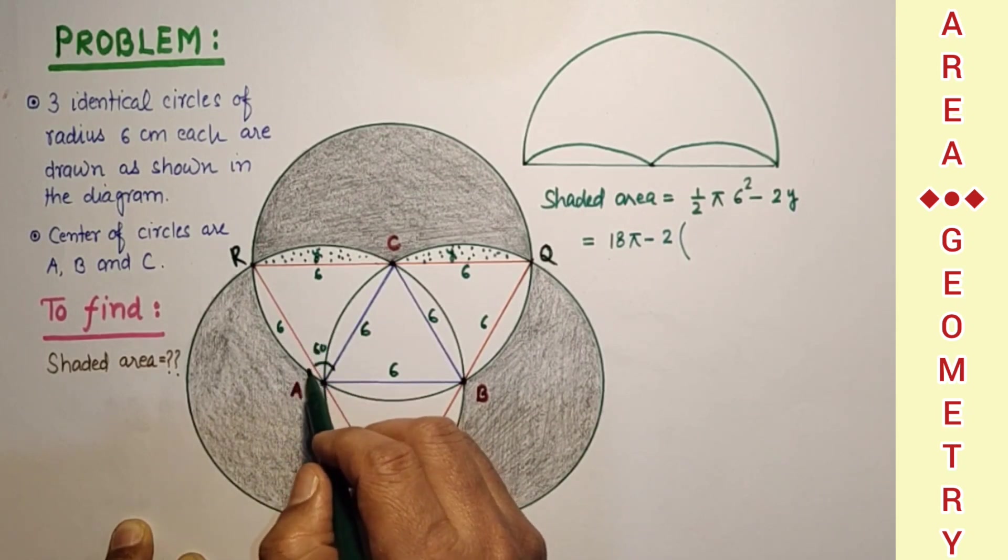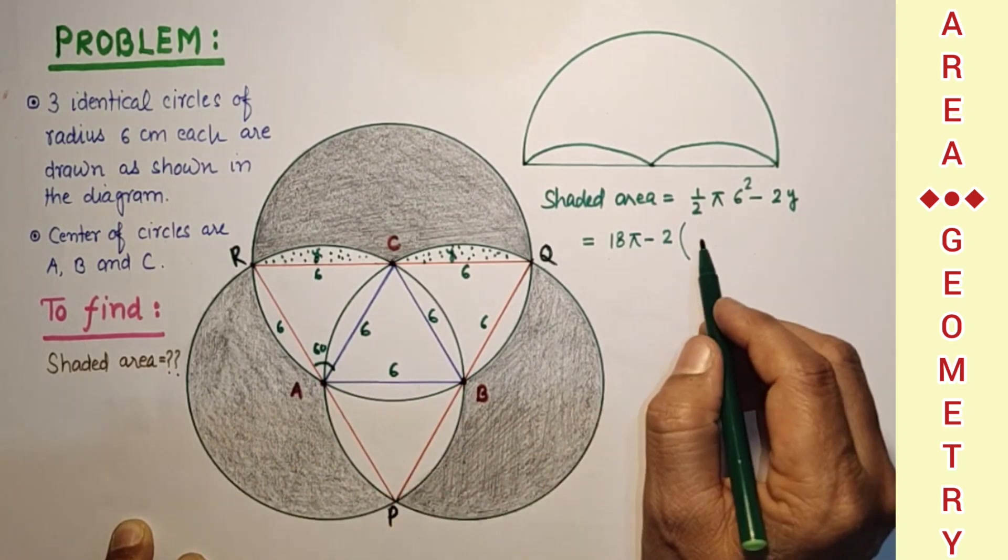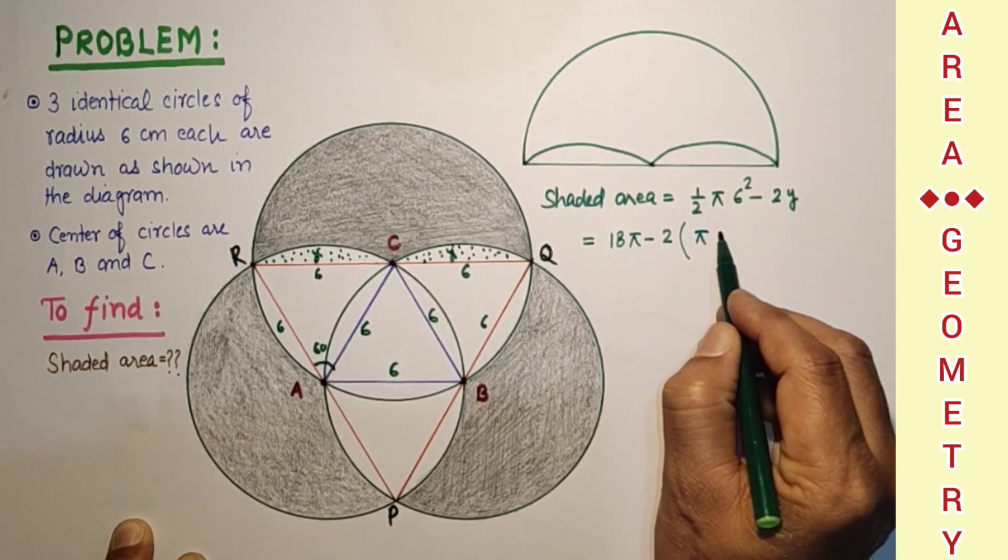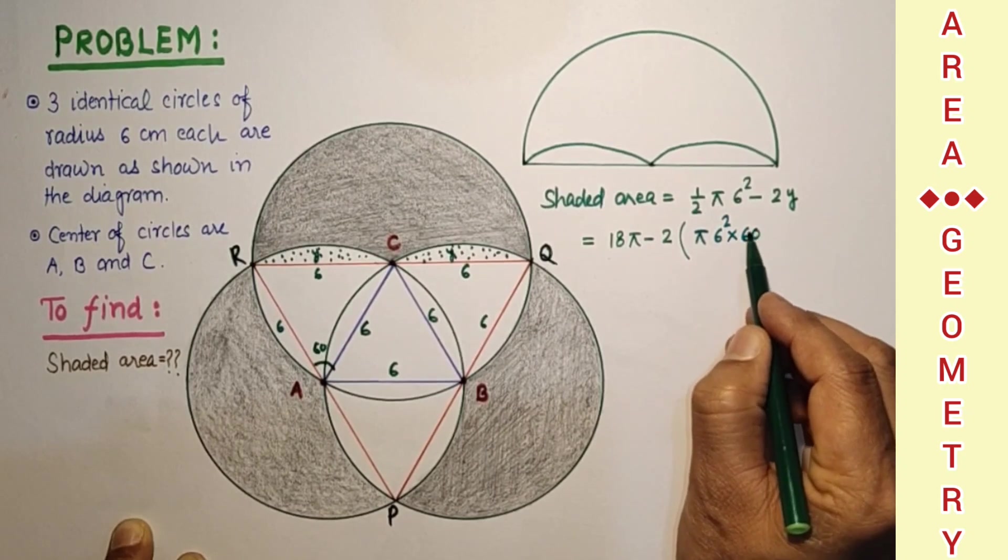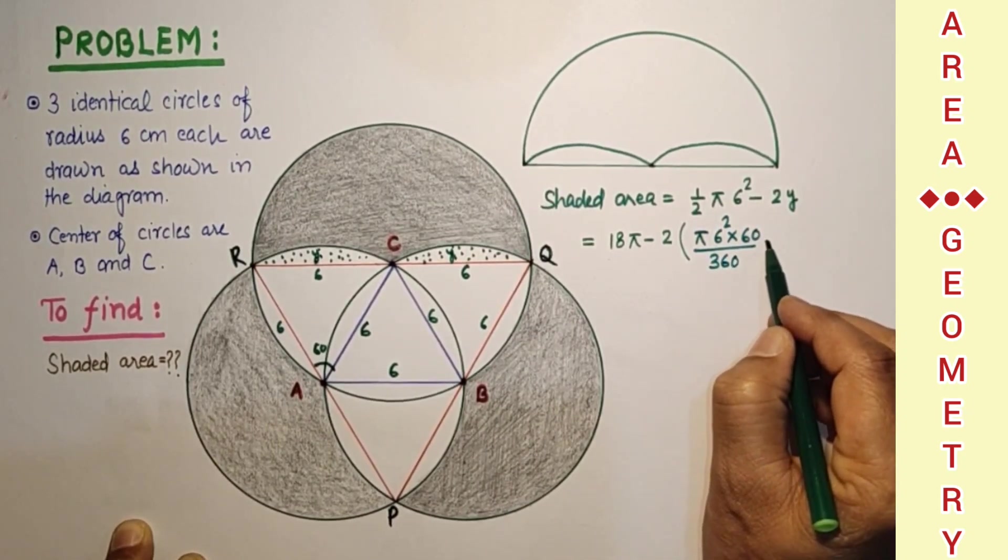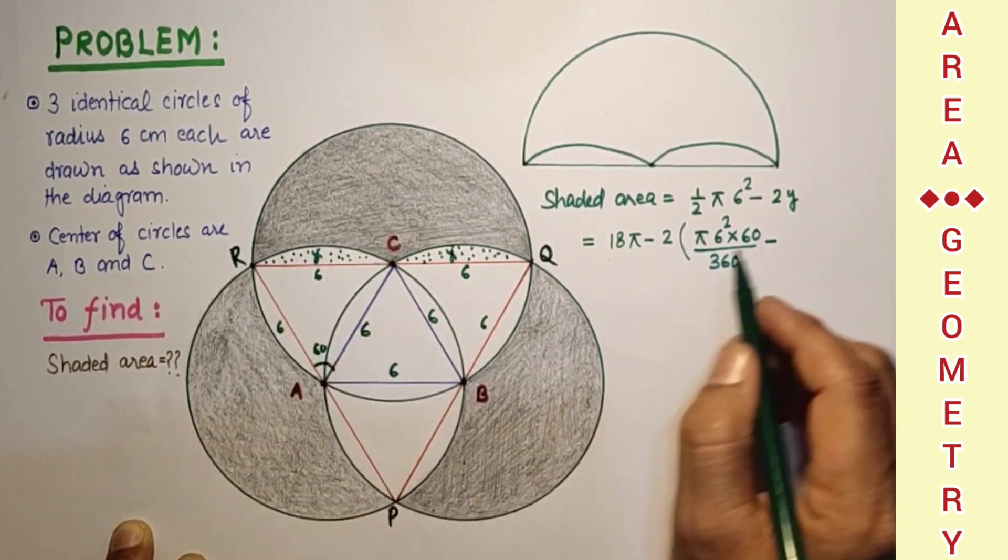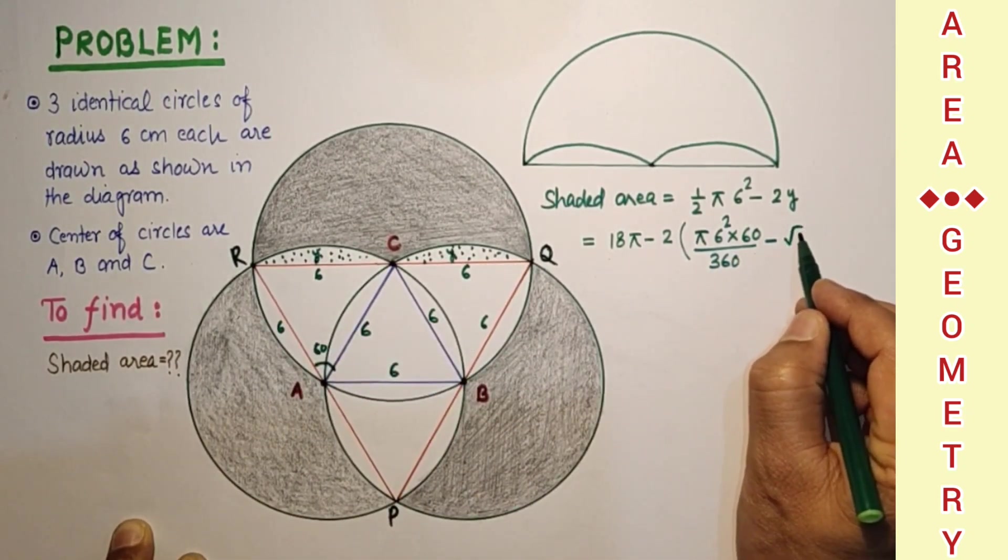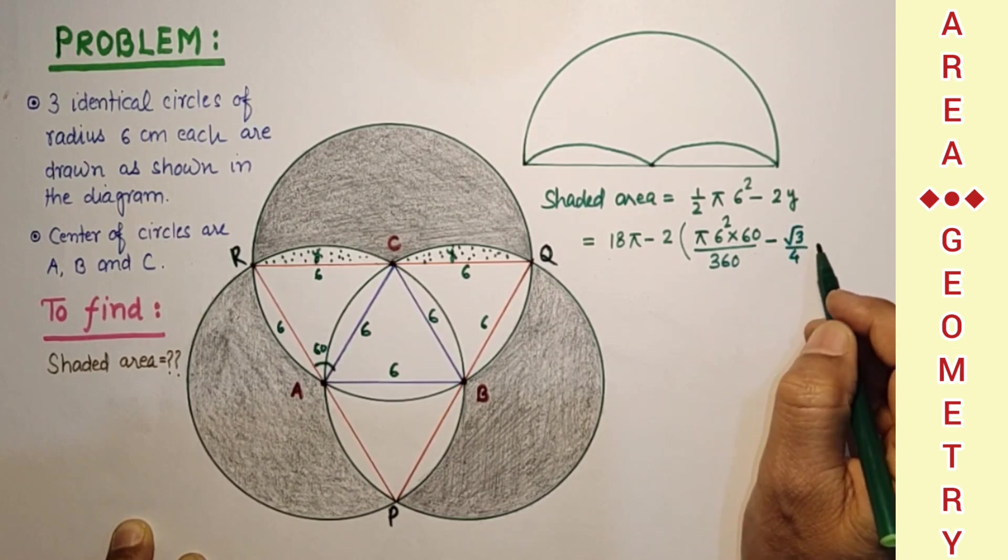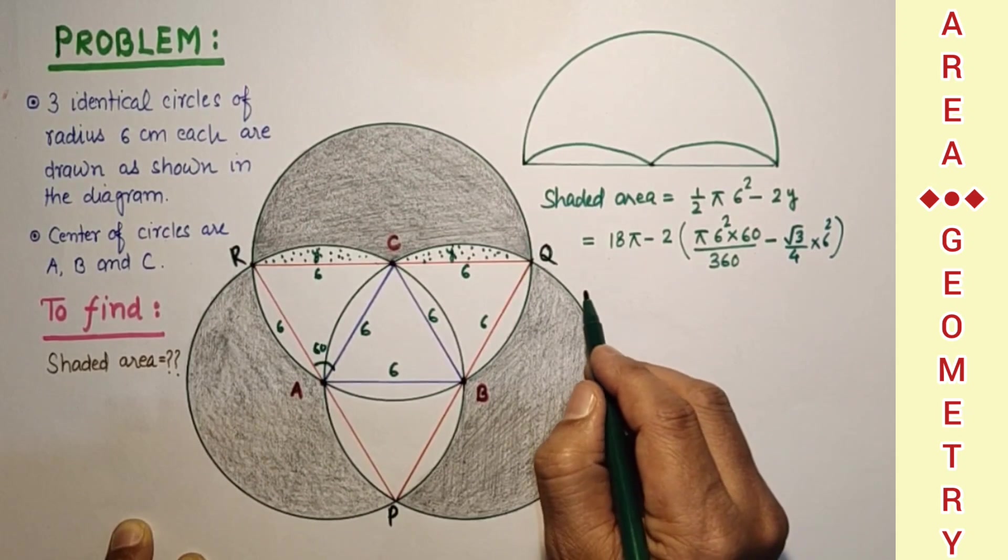Sector's area pi r square theta over 360. So pi, 6 square, theta is 60, pi r square theta over 360, minus area of this triangle. This triangle is equilateral triangle minus root 3 by 4 and side square, which is 6 square.